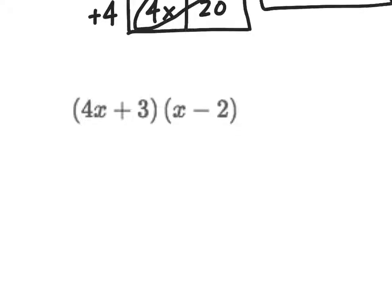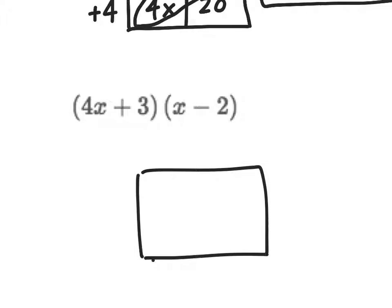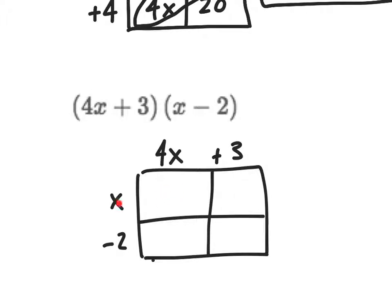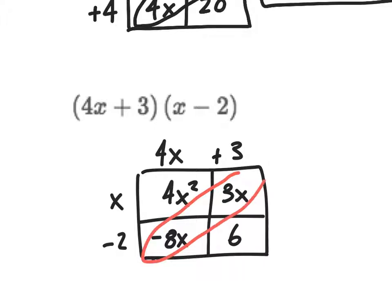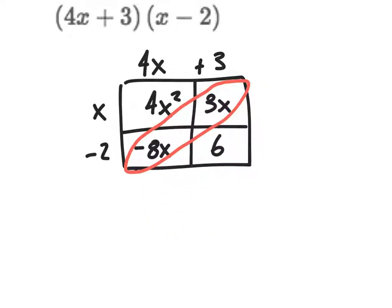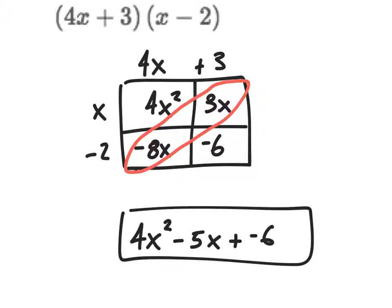Using the box method on four x plus three times x minus two: I draw a two-by-two box with four x and plus three across the top, and x and minus two on the side. x times four x gives four x squared; x times three gives three x; negative two times four x gives negative eight x; negative two times three gives negative six. Combining like terms: four x squared minus five x minus six. Same result.